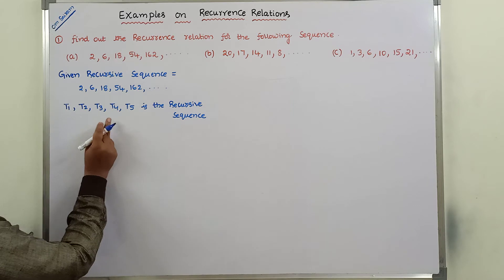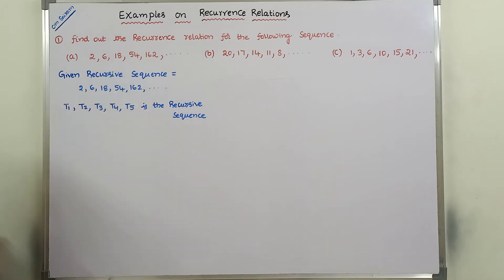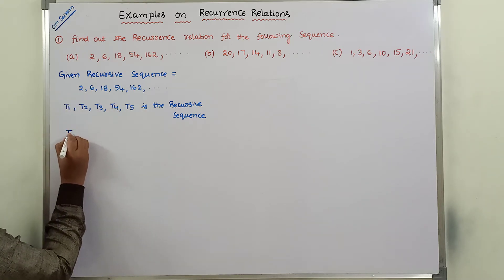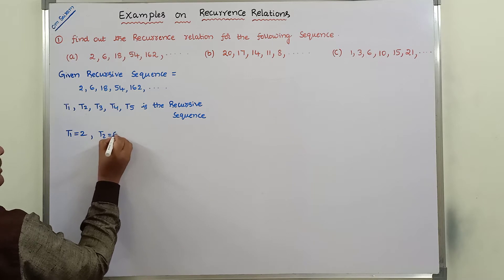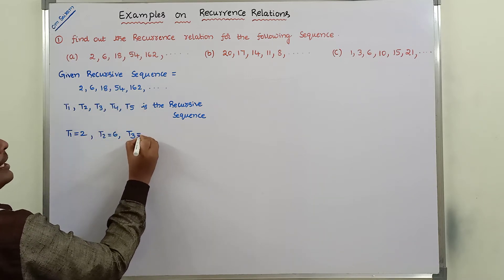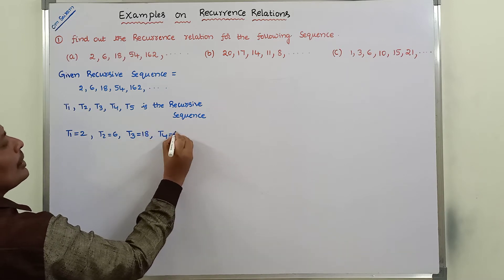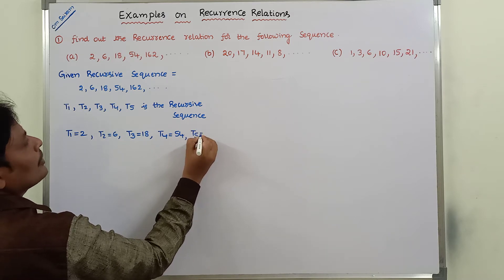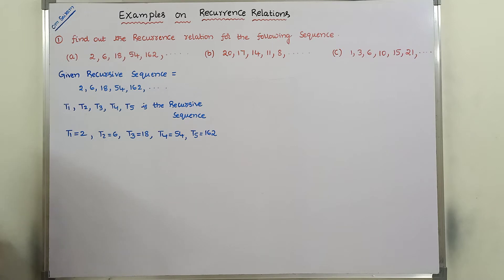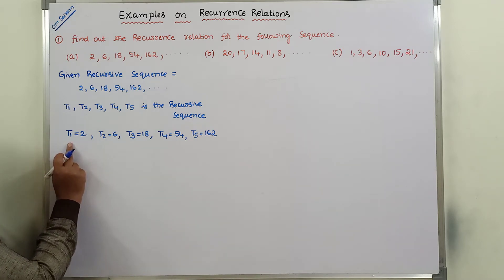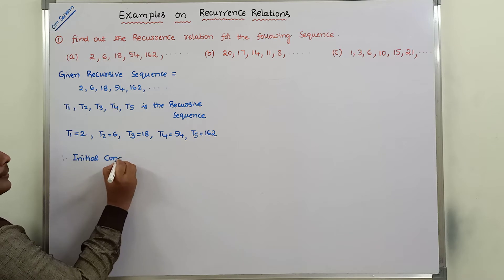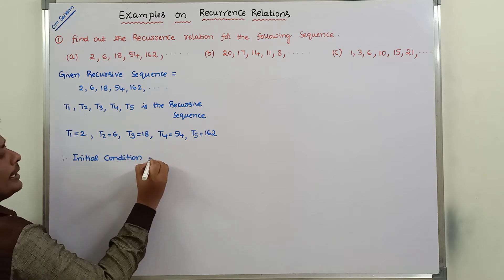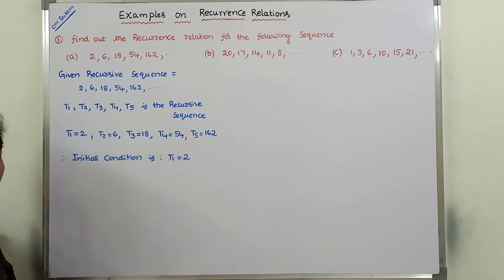Comparing this with the given recursive sequence: T1 = 2, T2 = 6, T3 = 18, T4 = 54, T5 = 162. The initial term in the sequence gives us our initial condition, which is T1 = 2.